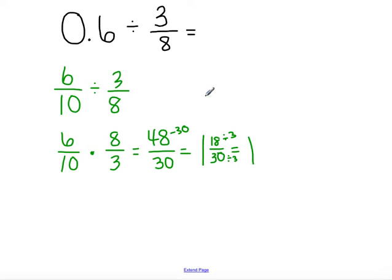You might also notice that they're divisible by 6, so actually, let's do that because that's going to be less work for us in the end, so I'm going to divide by 6 instead. 18 divided by 6 is 3, and 30 divided by 6 is 5. So, I end up with an answer of 1 and 3 fifths.